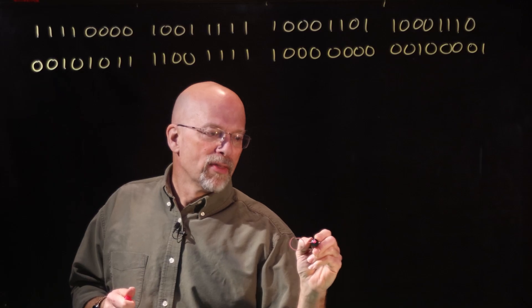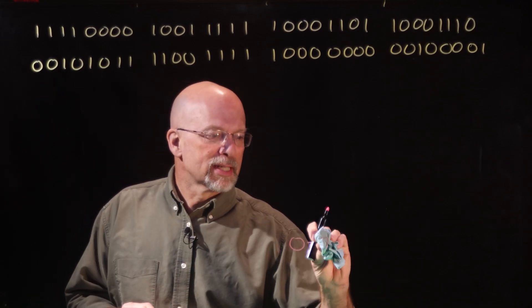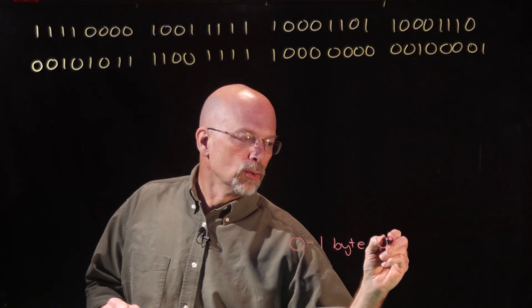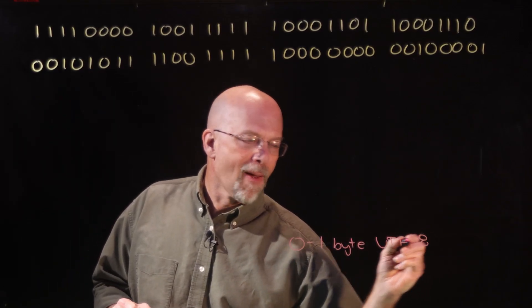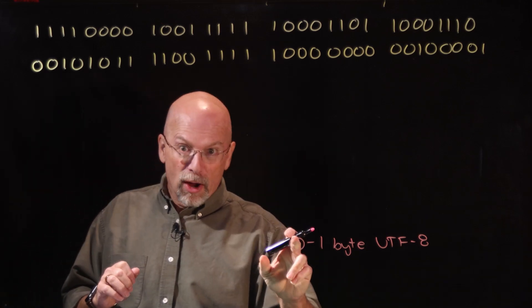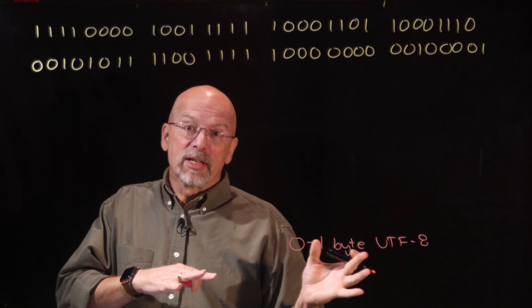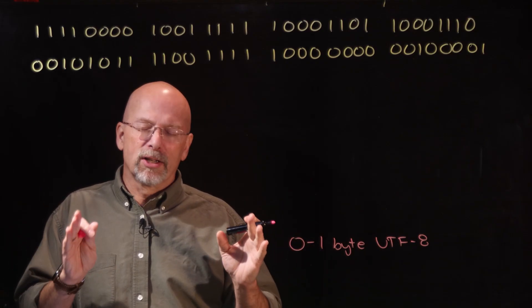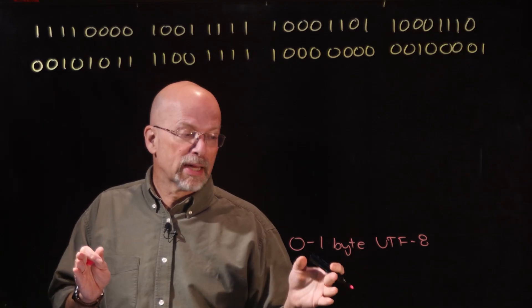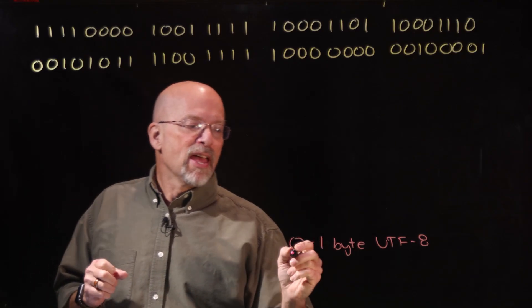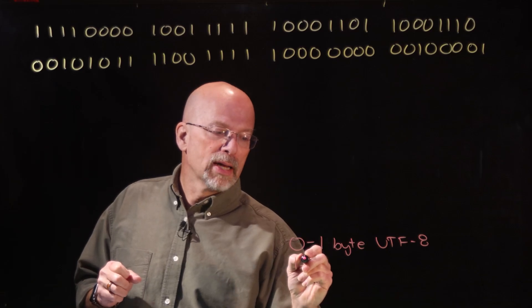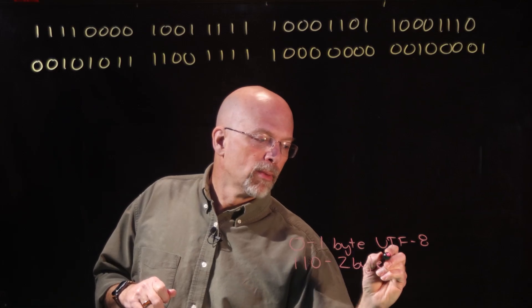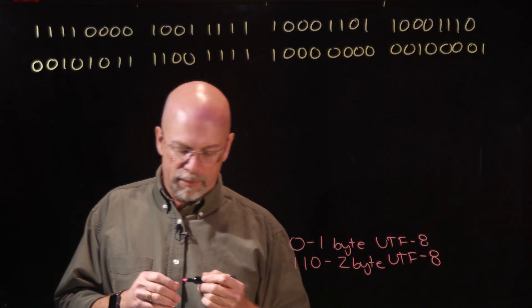First, if a byte starts with a zero, that means it's a one-byte UTF-8. That first zero takes up one of the bits, so we've got seven bits left over. If you have a Unicode code point that can be represented with zero to seven bits, you'll find it in that one-byte form. If it starts with one-one-zero, that means it's a two-byte UTF-8.